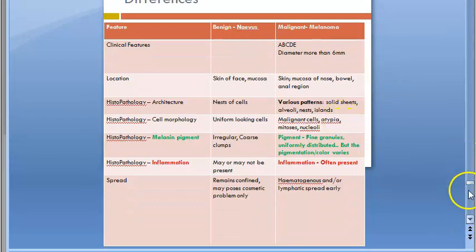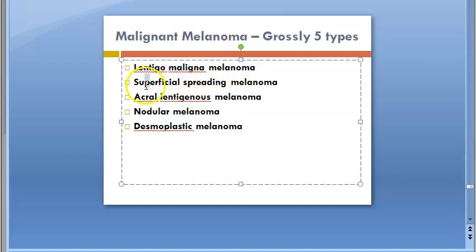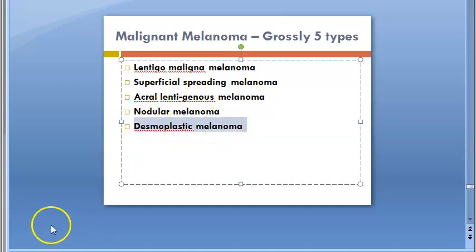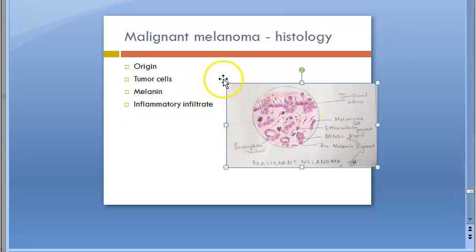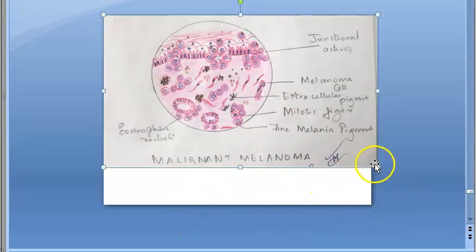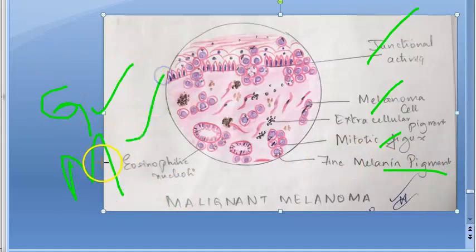Moving to the gross morphology of malignant melanoma, there are five types: lentigo maligna melanoma, superficial spreading melanoma, acral lentiginous melanoma, nodular melanoma, and desmoplastic melanoma. The microscopy shows junctional activity, melanoma cells, mitotic figures, and melanin pigment. The detailed gross and microscopy will be covered in the next video.